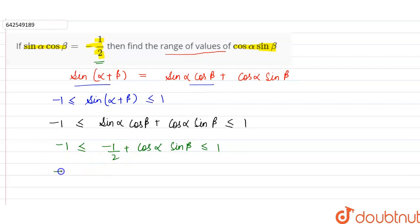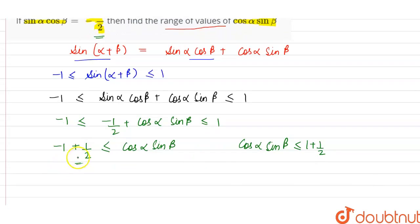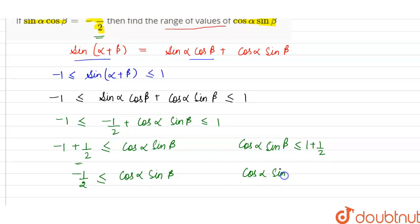If we separate these two and transfer minus 1 by 2 to the left hand side, it will become plus 1 by 2. So minus 1 plus 1 by 2 is less than or equal to cos alpha sin beta, which is less than or equal to 1 plus 1 by 2. This gives us minus 1 by 2 is less than or equal to cos alpha sin beta, and cos alpha sin beta is less than or equal to 3 by 2.